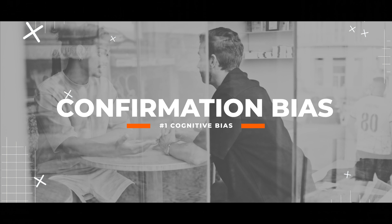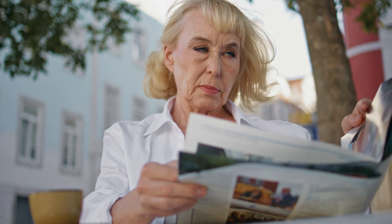The first is confirmation bias. Confirmation bias is our tendency to search for, interpret, and remember information that confirms our pre-existing beliefs while ignoring or dismissing contrary evidence. In conflict, people tend to pay more attention to information that supports their own views, reinforcing their position and making it challenging to find common ground. This bias perpetuates conflict by amplifying disagreements and making it difficult for people to see things from a different perspective.